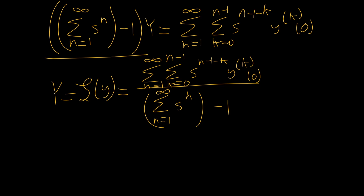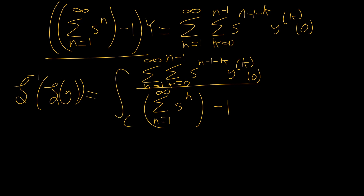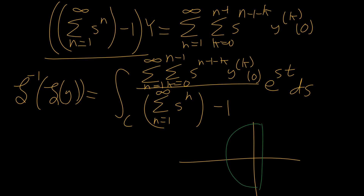So now all we have to do is apply the inverse Laplace transform to both sides. The inverse Laplace transform of the Laplace transform of Y equals the integral over contour C of our expression times E to the ST, dS — with a 1 over 2πi out front — where C is a semicircular contour in the complex plane chosen such that all residues of the function are included inside it, so the integral reduces to the sum of the residues.